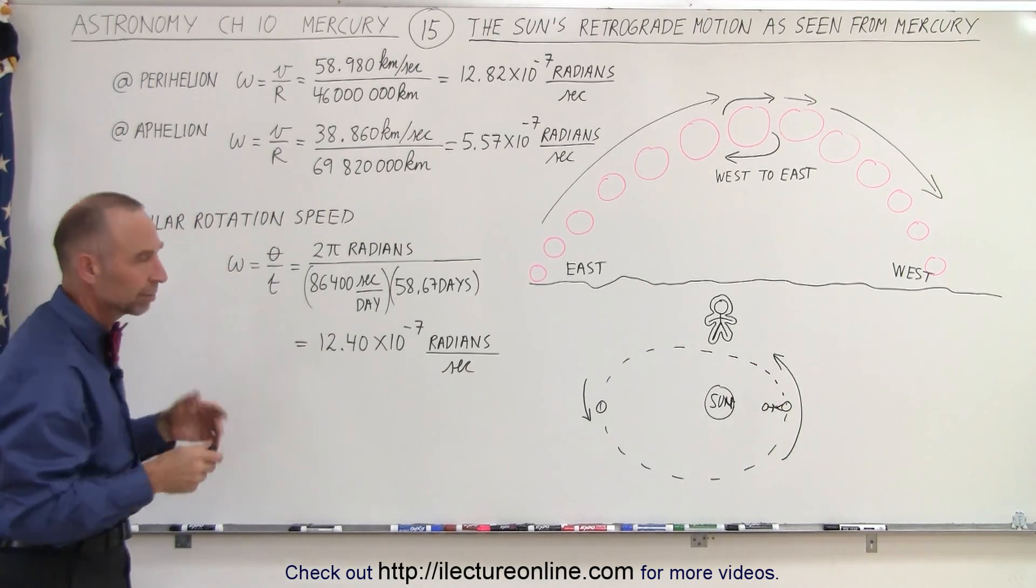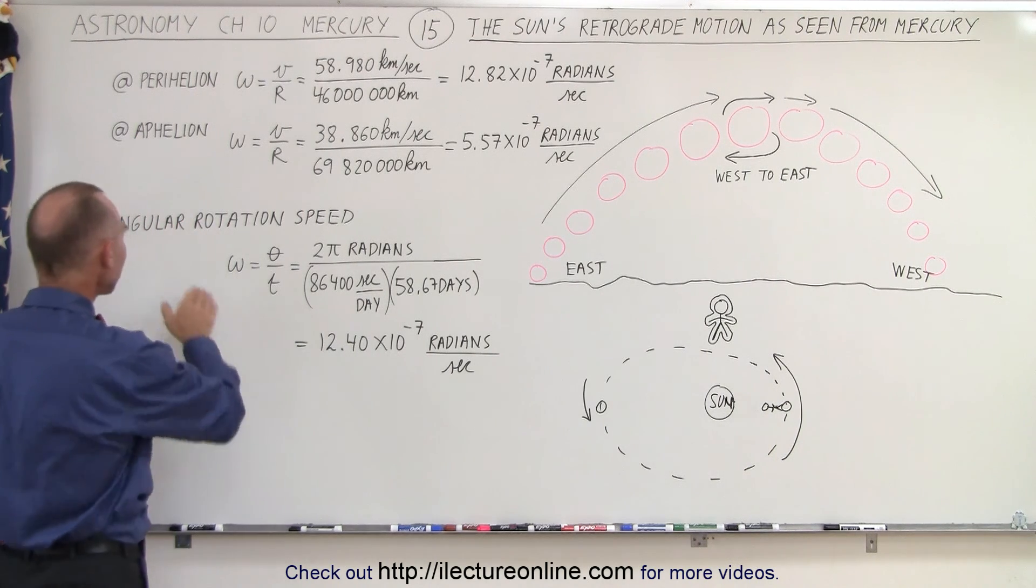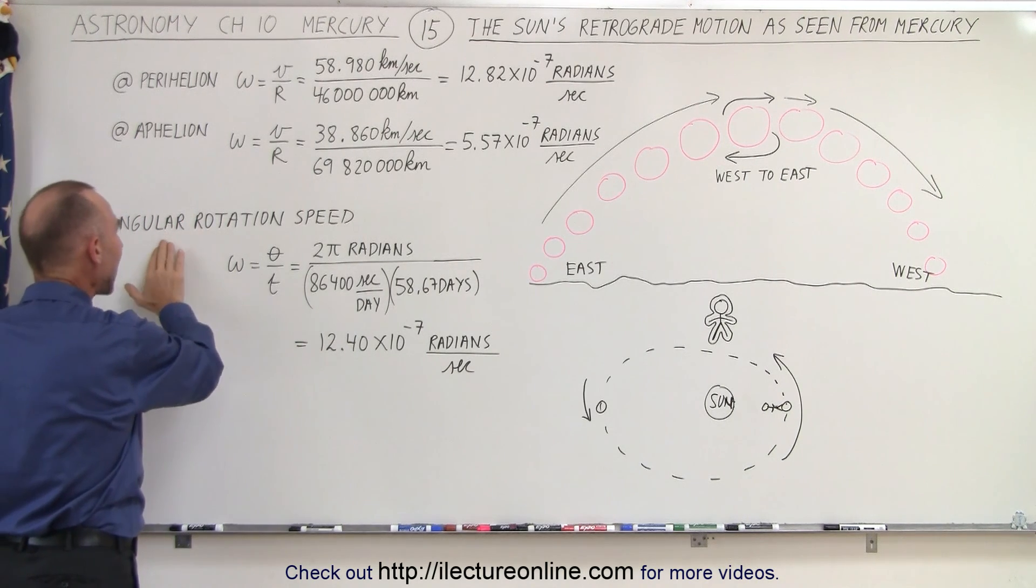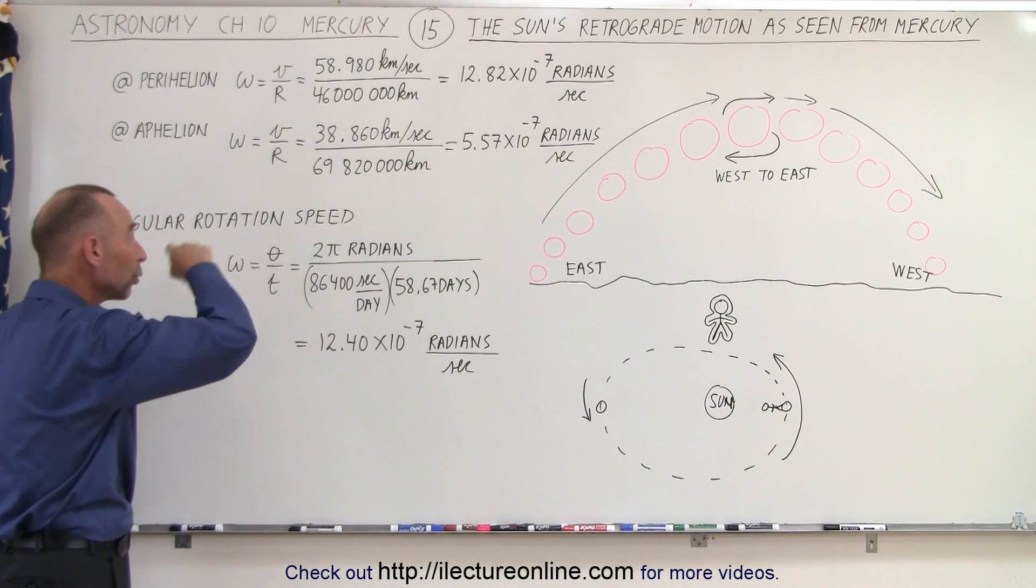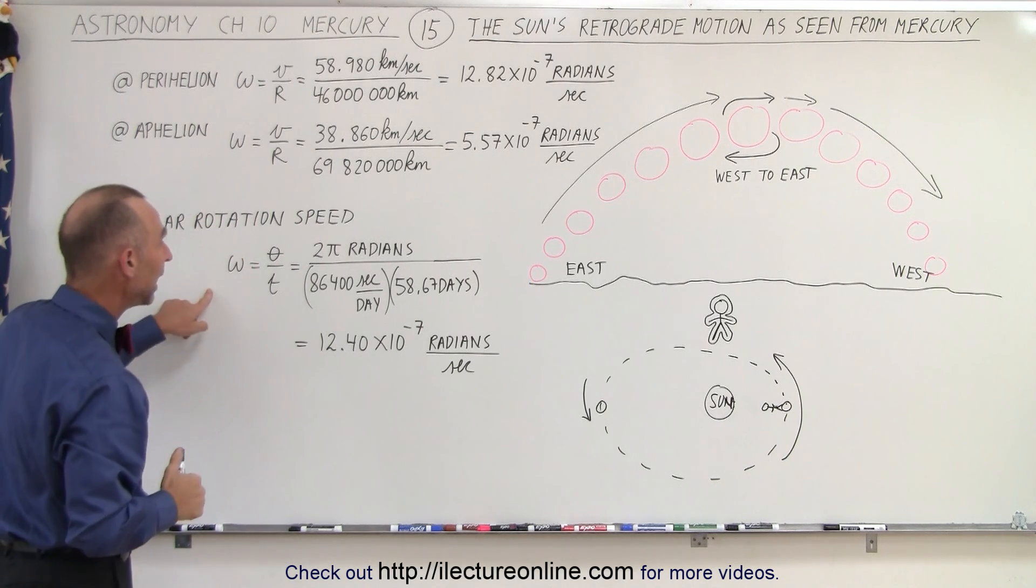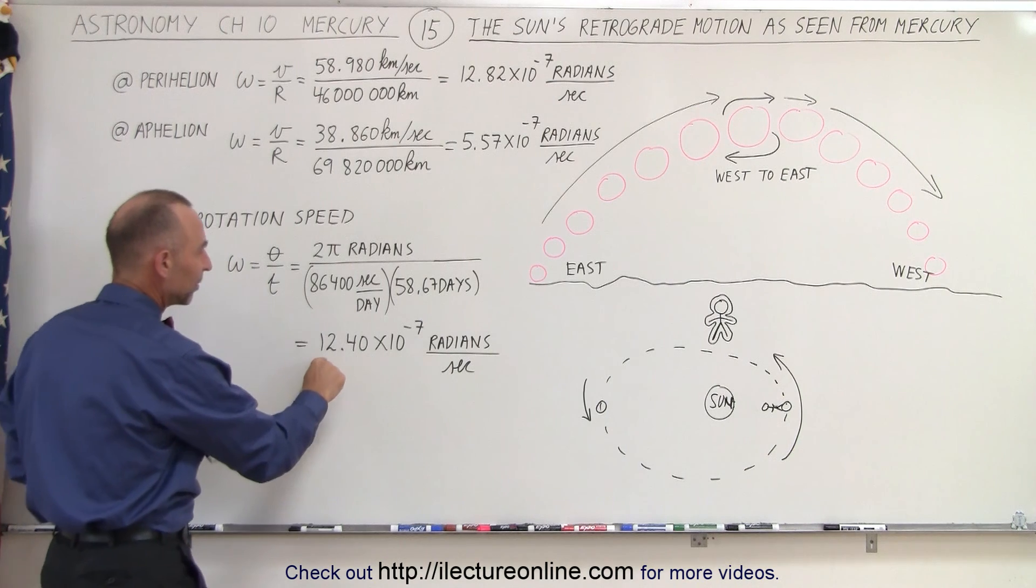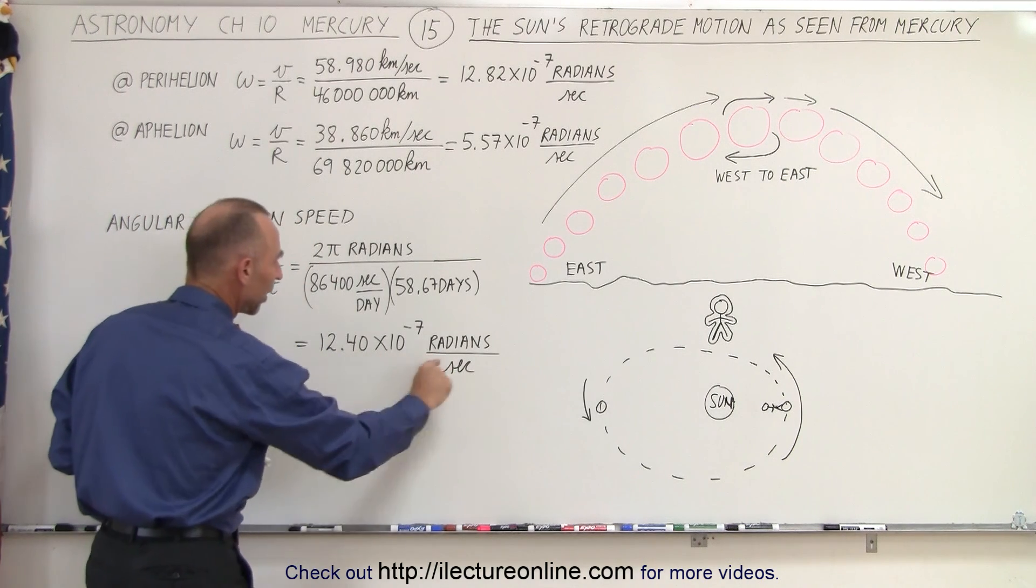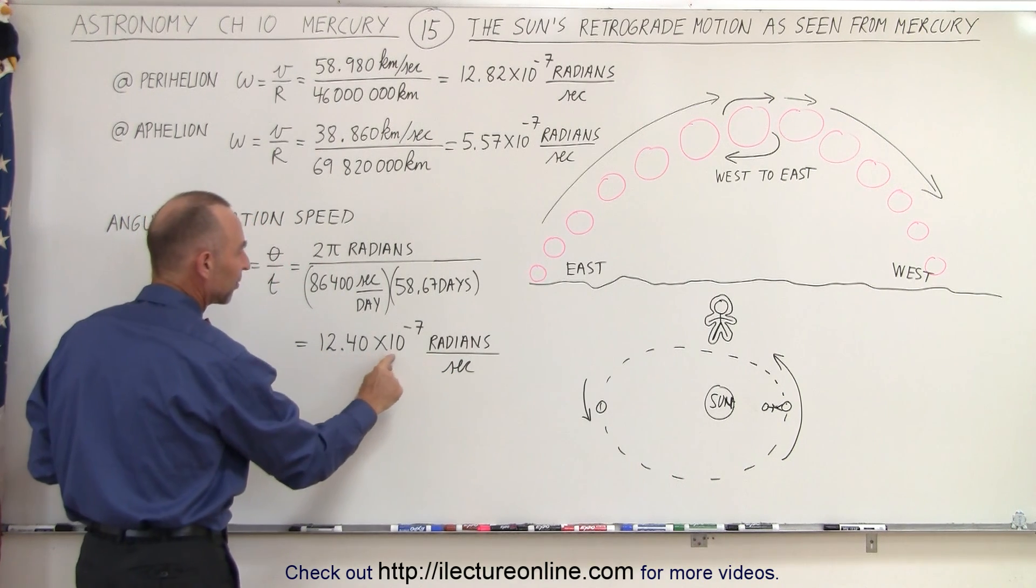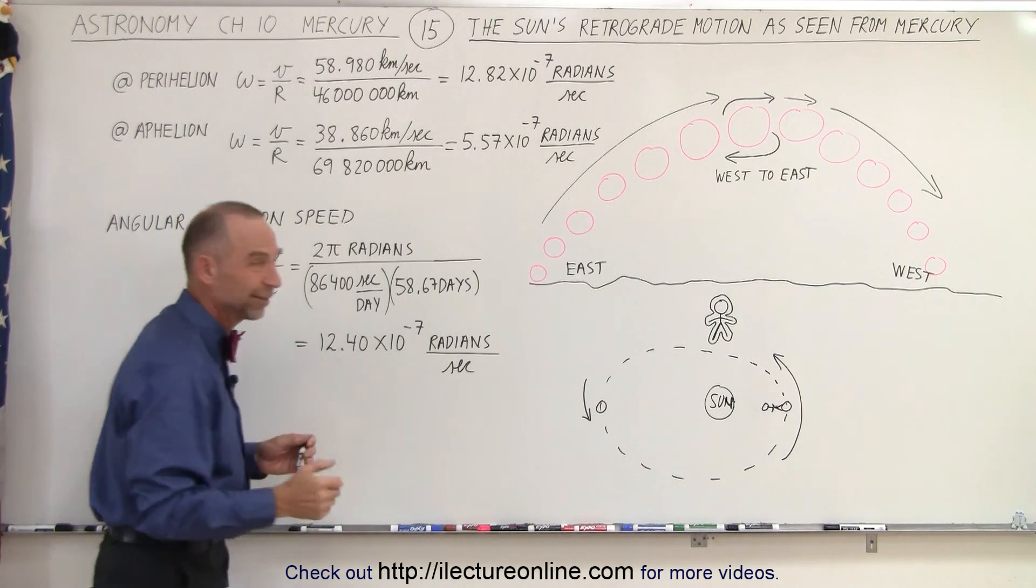Here we calculated the angular rotation speed due to the rotation of the planet. Let's take a look at the results. The planet rotates at an angular velocity of 12.4 times 10 to the minus 7 radians per second. Of course it's going to be very slow because the rotation of Mercury is very slow.